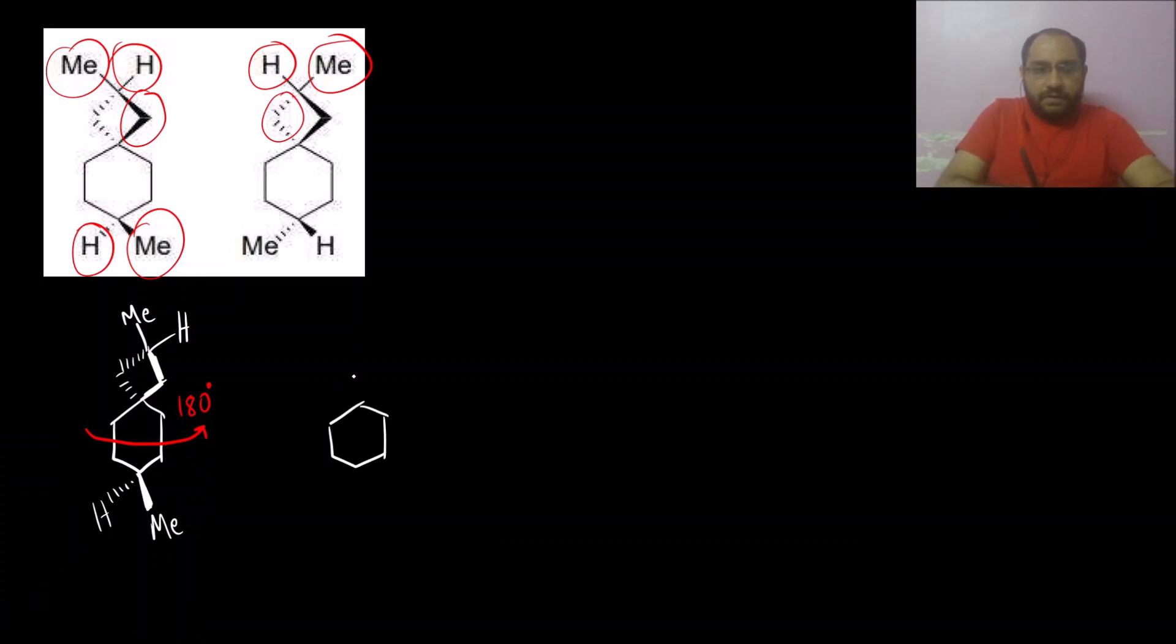After rotation, the in-plane ring will remain as it is. This will remain below the plane. The methyl which was on the left will now come on the right, and hydrogen which was on the right has now come on the left.